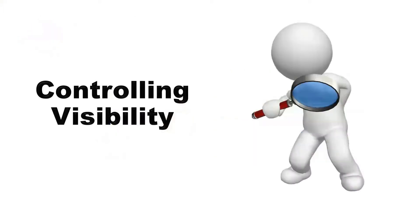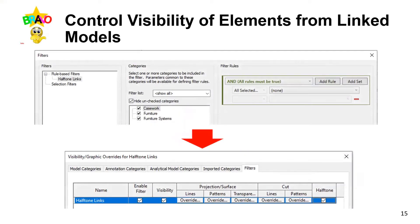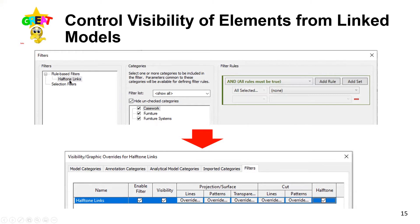One of Revit's major strengths is the ability to control visibility. You have a virtual model with an imaginary camera — you click and take pictures to create views. View templates control those views: show what you want, hide what you don't. We can also bring in models from consultants and other disciplines, federating them with our own model by linking them in, then controlling visibility of elements within those links.